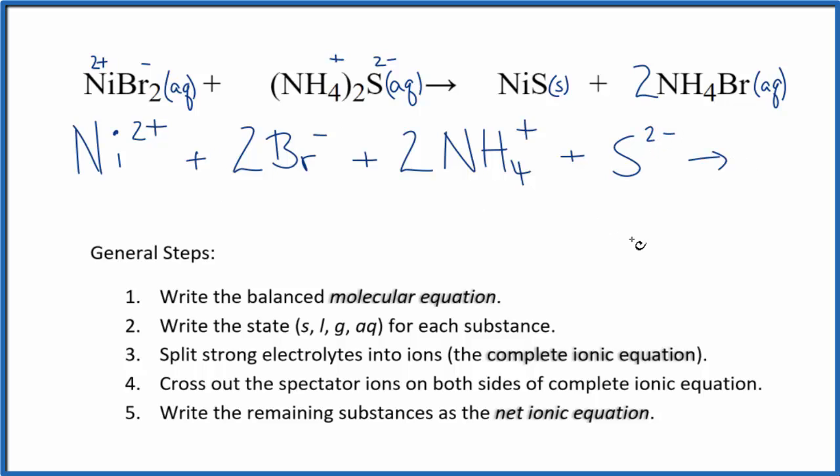These are the reactants in our net ionic equation. For the products, in net ionic equations, we don't split solids apart. So we have NiS, that's nickel-2-sulfide. And then we have, we said positive and negative. So two ammonium ions, like the reactants.